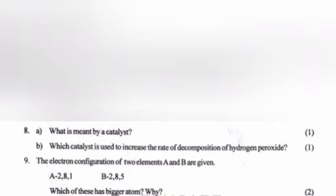Question 9: The electron configuration of two elements A and B are given. Which of these has bigger atom? Why? Answer: A. Size of an atom decreases on moving from left to right along a period.